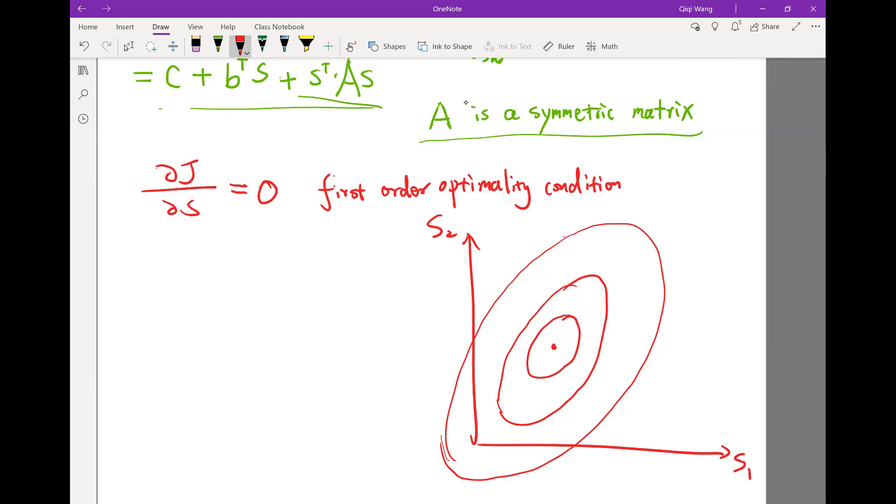no matter which direction you walk towards, the value of the objective function would vary very little. It's basically flat, no matter which direction you look at, at exactly the top. So this is really the first order optimality condition.